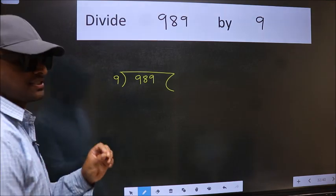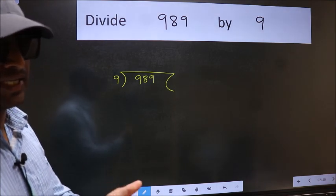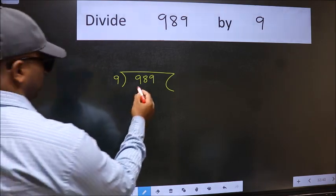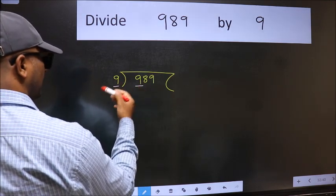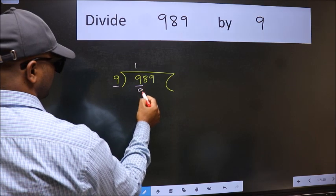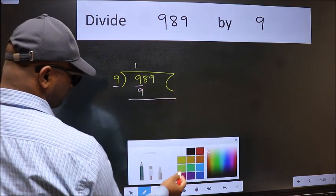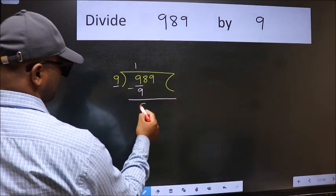This is your step 1. Next. Here we have 9 and here 9. When do we get 9 in 9 table? 9 once, 9. Now we should subtract. We get 0.